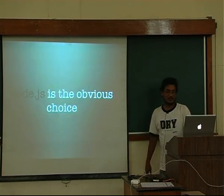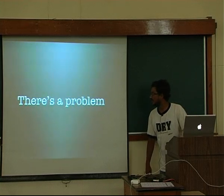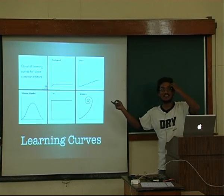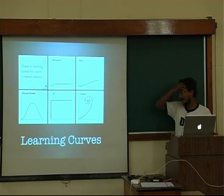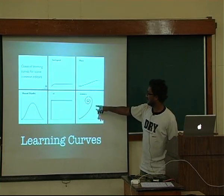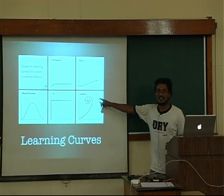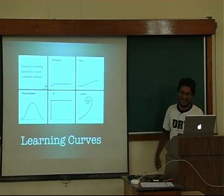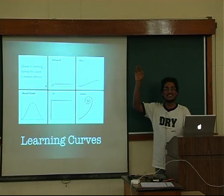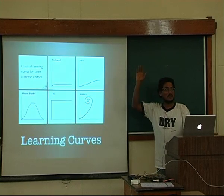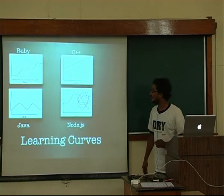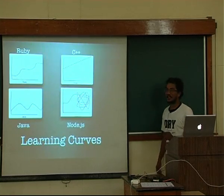Node pretty much seems like the obvious choice to me. Has anybody seen this earlier? This is the classic XKCD about learning curves. The Emacs one is really interesting — I don't understand what that means. Anybody use Emacs?